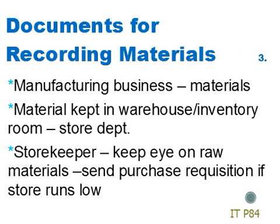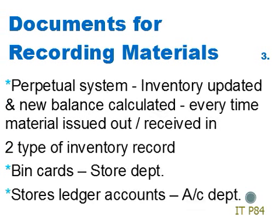An important item that is purchased in a manufacturing business is materials. They are usually kept in a warehouse or inventory room, which is usually called the store's department. The storekeeper keeps an eye on the raw materials and will create a purchase requisition if the store runs low. Most businesses keep a record of the materials they have in inventory. The perpetual system is an inventory system where inventory is updated every time materials are received or issued, and a new balance is calculated. This system can be manual or computerized.